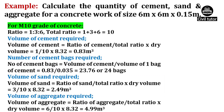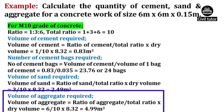The volume of aggregates required will be equal to ratio of aggregate upon total ratio, multiplied by dry volume. Ratio of aggregates is taken as 6 in case of M10 grade of concrete, total ratio is 10 and dry volume is 8.32. So on substituting these values, volume of aggregates will be equal to 4.99m³.